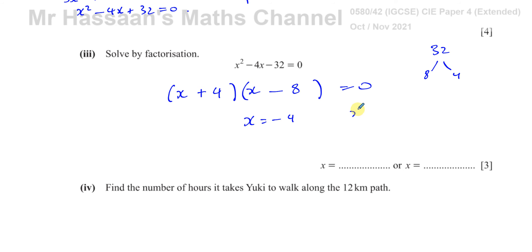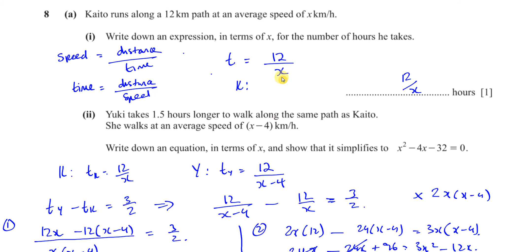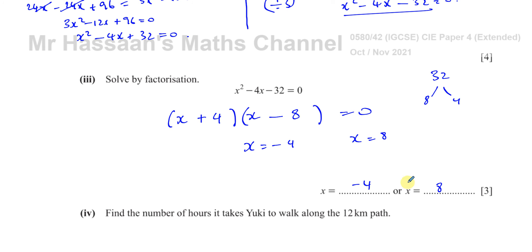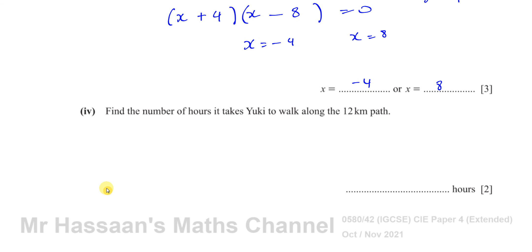Those are the two solutions to this equation. Now, x represents speed in kilometers per hour, so x = −4 doesn't make physical sense. However, part three only asks us to solve by factorization — it's not asking us to put it in context. So you must write down both answers: x = −4 and x = 8.